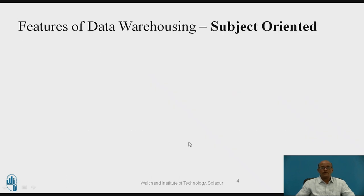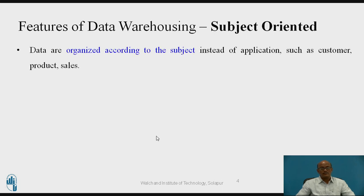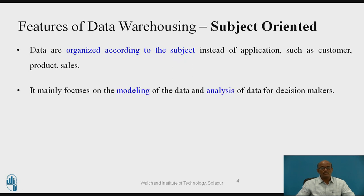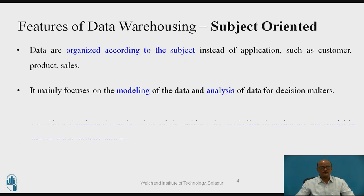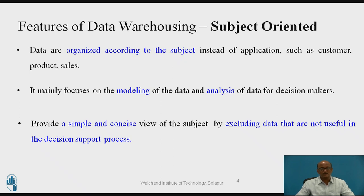Let us see the features one by one. The first one is subject-oriented. Data are organized according to subject, not according to applications. The subject may be customer, product, or sales — and the data is stored related to that subject only. It mainly focuses on modeling and analysis of the data, which can be used for decision makers. It provides a simple and concise view by removing noise or not-useful data so that we can support decision making.